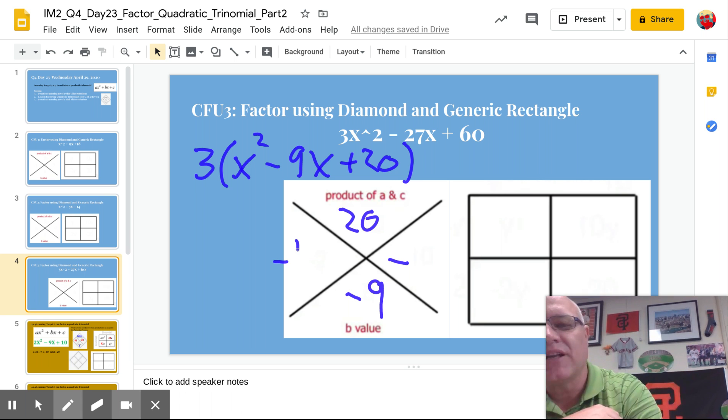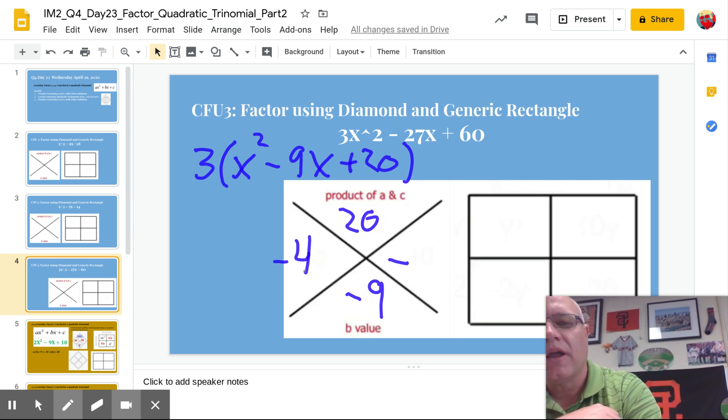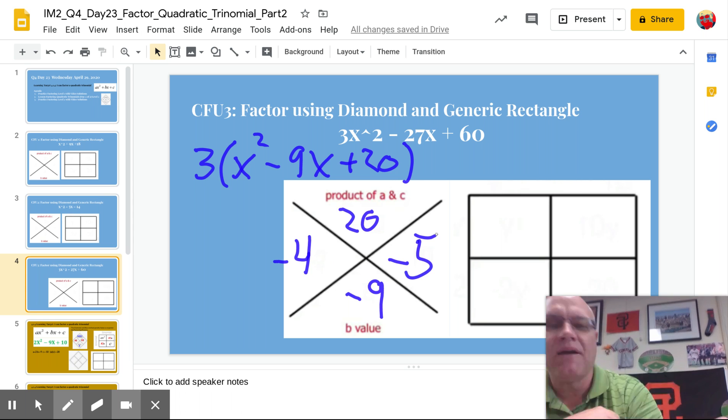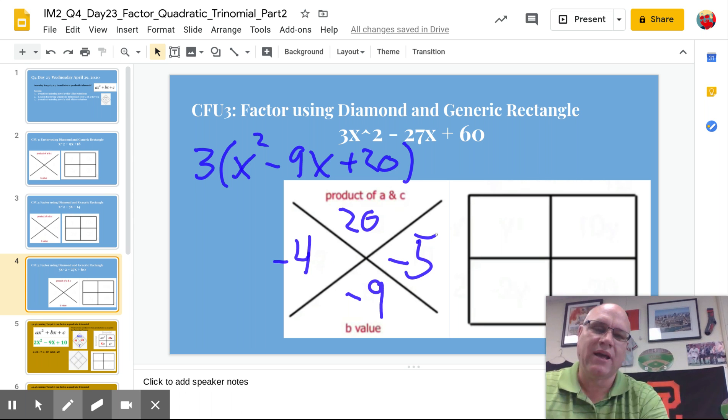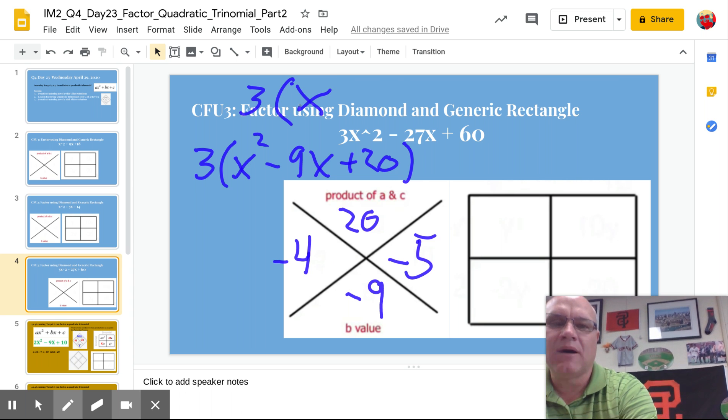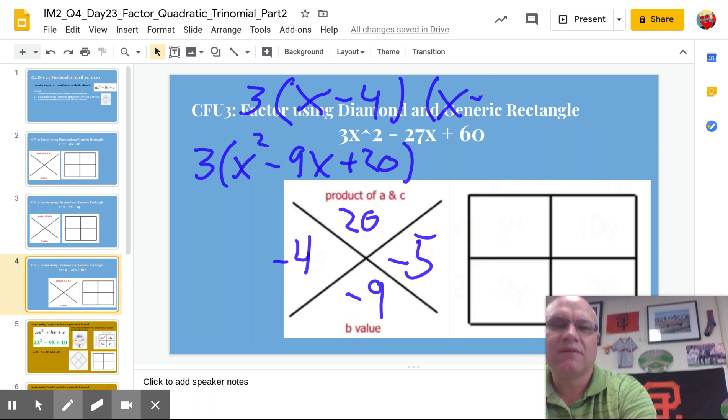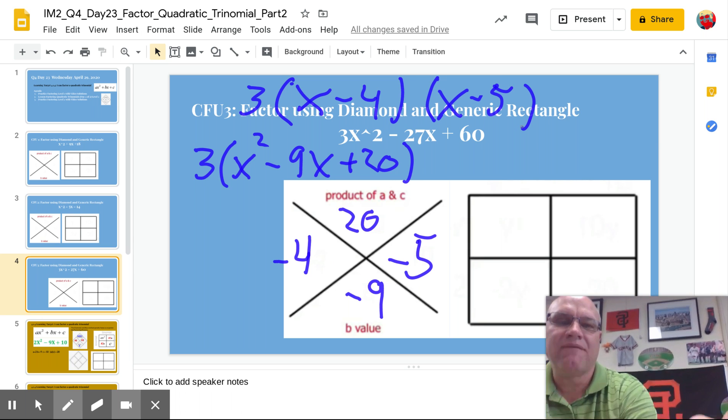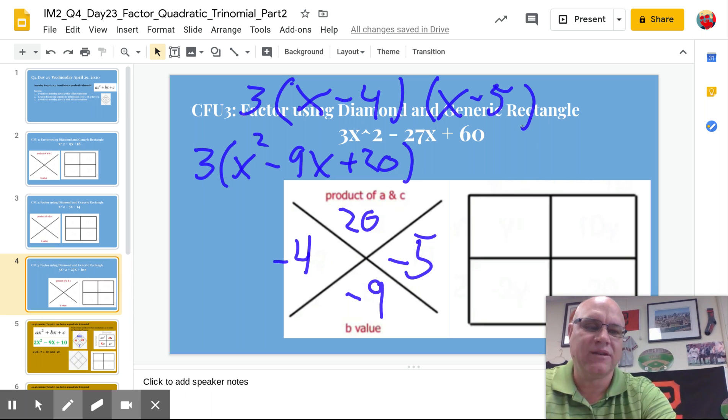This is a 1a, the a value is 1. So I could actually get away with just using the diamond here. So I know it's going to be 3 times x minus 4 multiplied by x minus 5. I really don't need the generic rectangle in this situation.